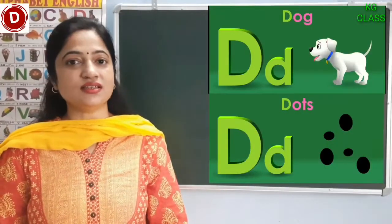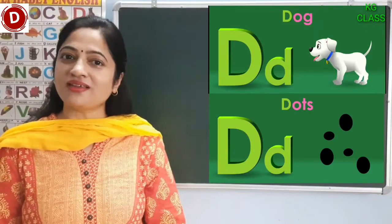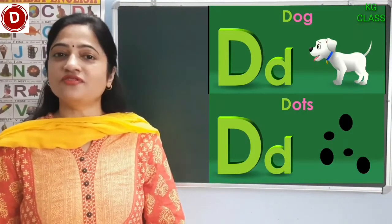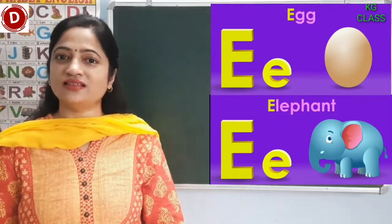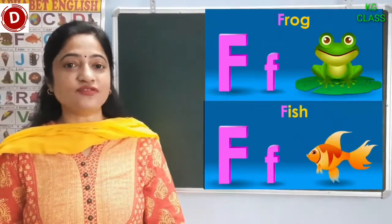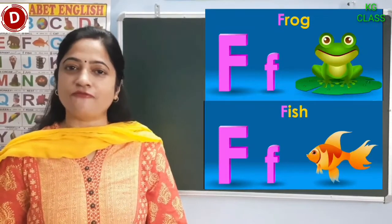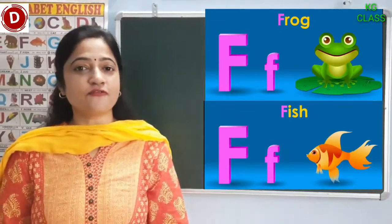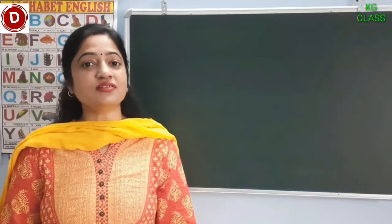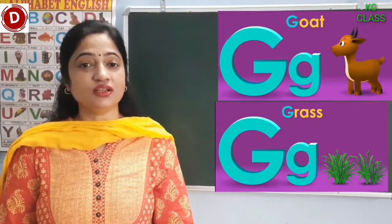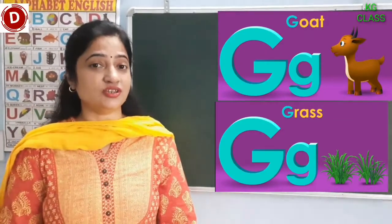After C comes D. The sound of D is 'd'. Dog. Dots. Which sound is coming? Yes, it's D. D says 'd'. After D it's E. E says 'eh'. E for egg, E for elephant, and the sound is 'eh'. Now comes F. F says 'f'. F for frog, F for fish. So which sound is coming? It's 'f'. The sound of F is 'f'. You also speak with me. After F comes G. G says 'gu'. G for goat, G for grass. And which sound is coming? 'Gu'. G says 'gu'.